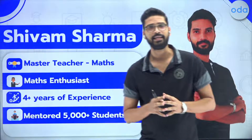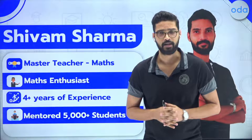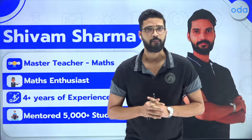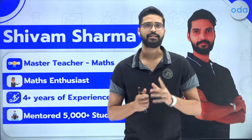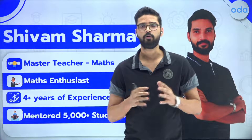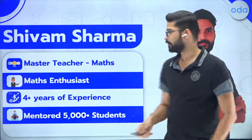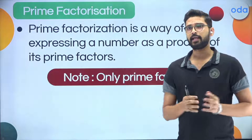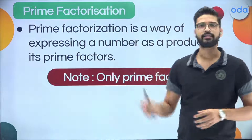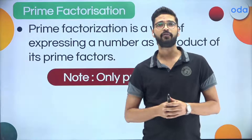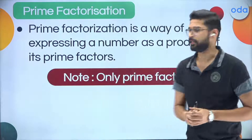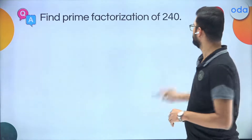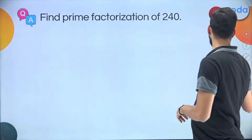Today I will be talking about how to find the total number of factors for any given number. For that, you should know two very important topics. The first one is prime factorization — how to do the prime factorization of any given number. Prime factorization is a way of expressing a number as a product of its prime factors only. Let's find the prime factorization of 240.